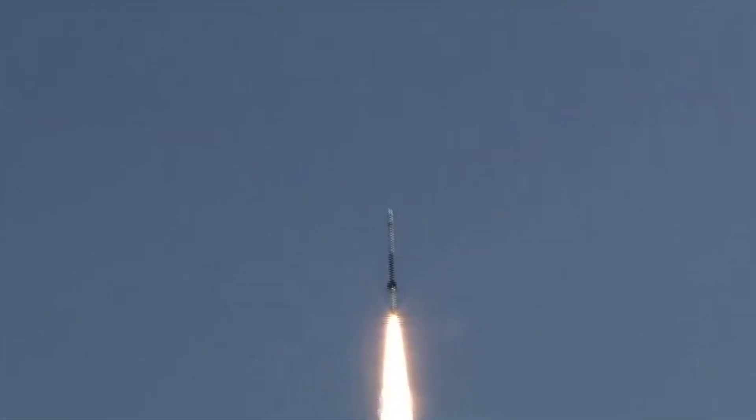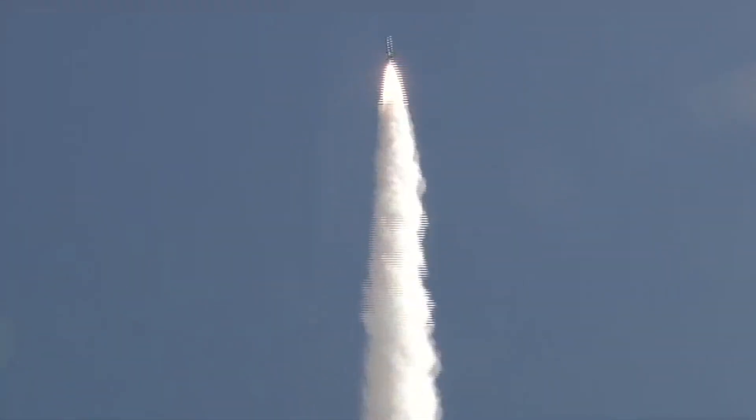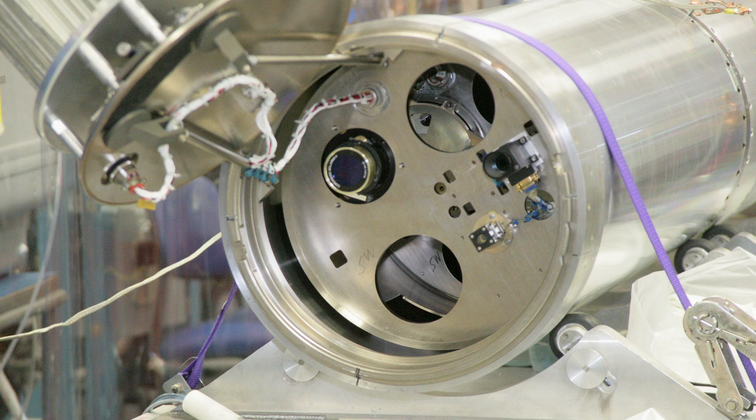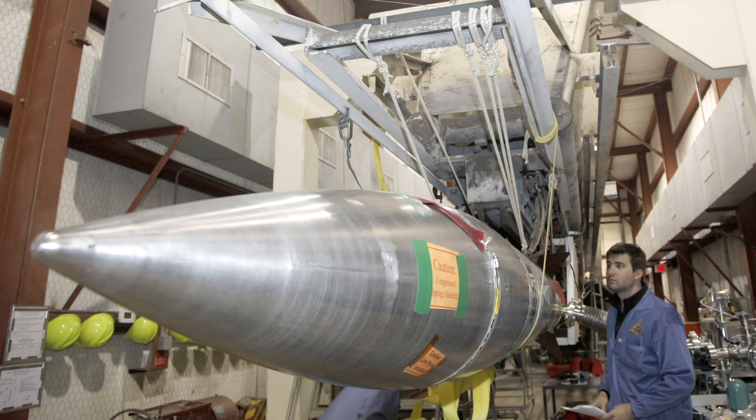One of the objectives of the EUNIS flight was to address this. EUNIS is an acronym for the Extreme Ultraviolet Normal Incident Spectrograph. It's an instrument that we fly on a sounding rocket out of White Sands Missile Range, New Mexico.